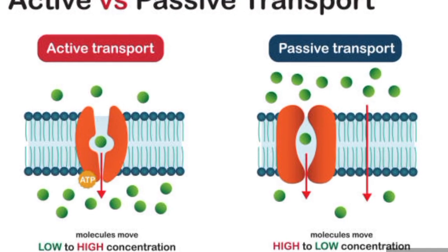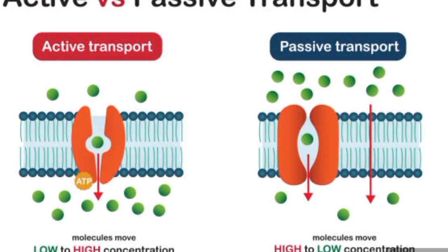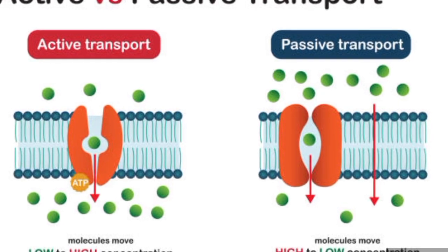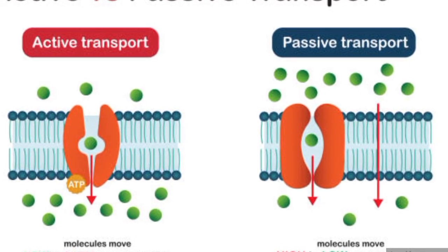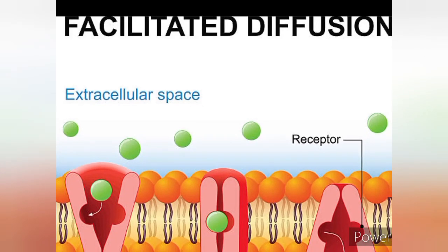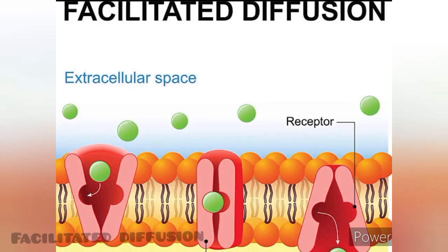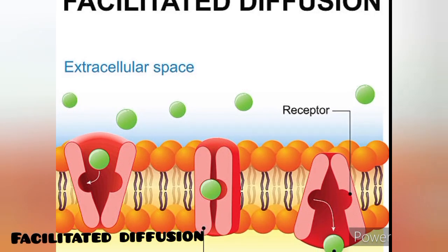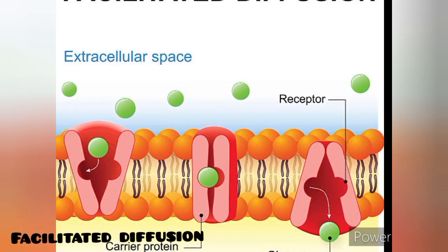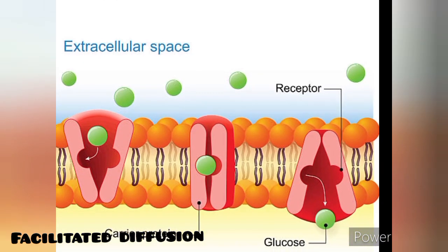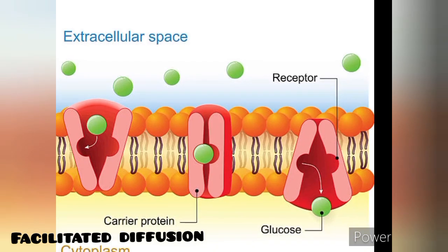Membrane transport: The plasma membrane employs various mechanisms for transport. Passive transport includes diffusion, which is movement of molecules from high to low concentration, and facilitated diffusion, which is aided movement through protein channels or carriers without energy input.